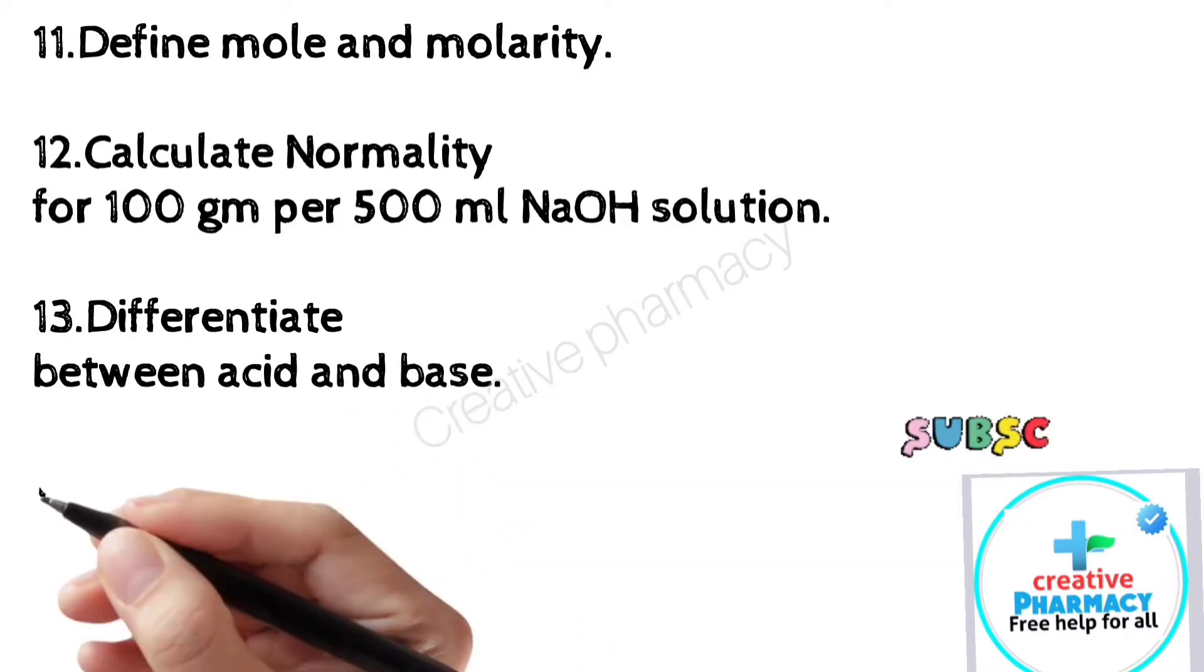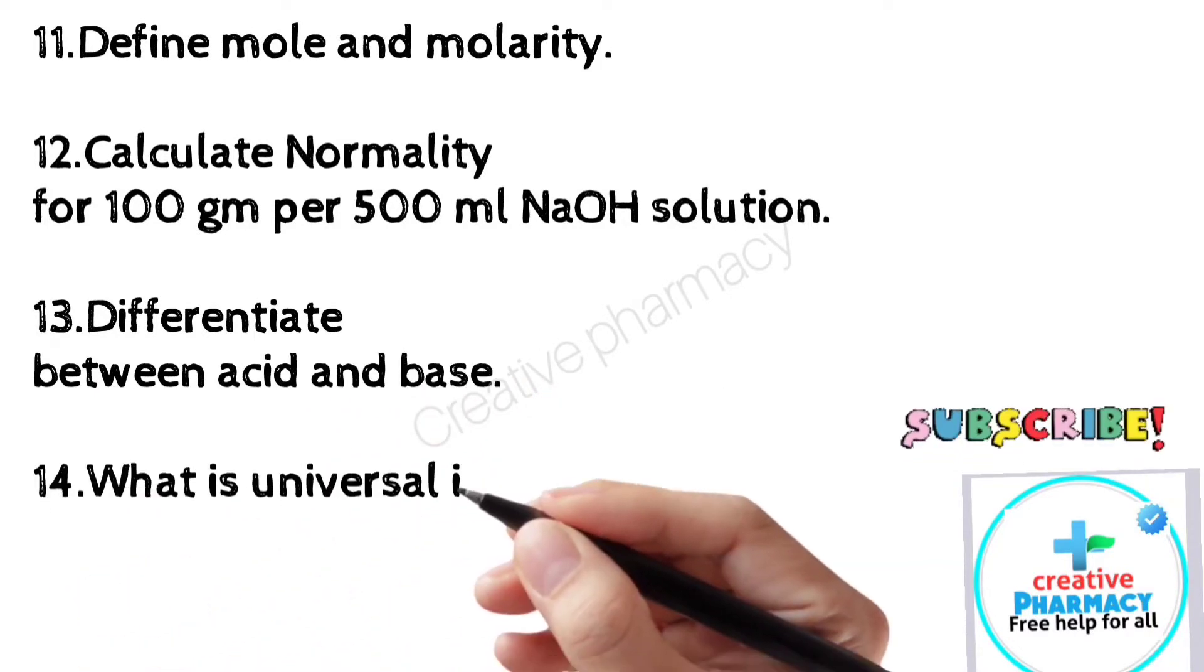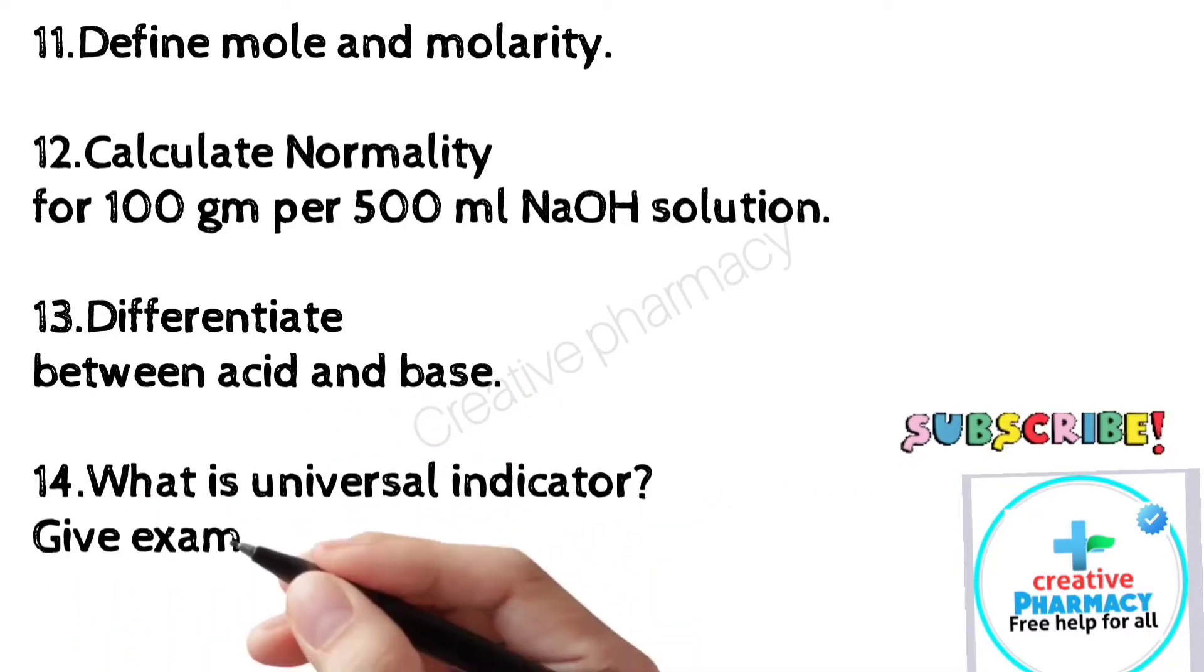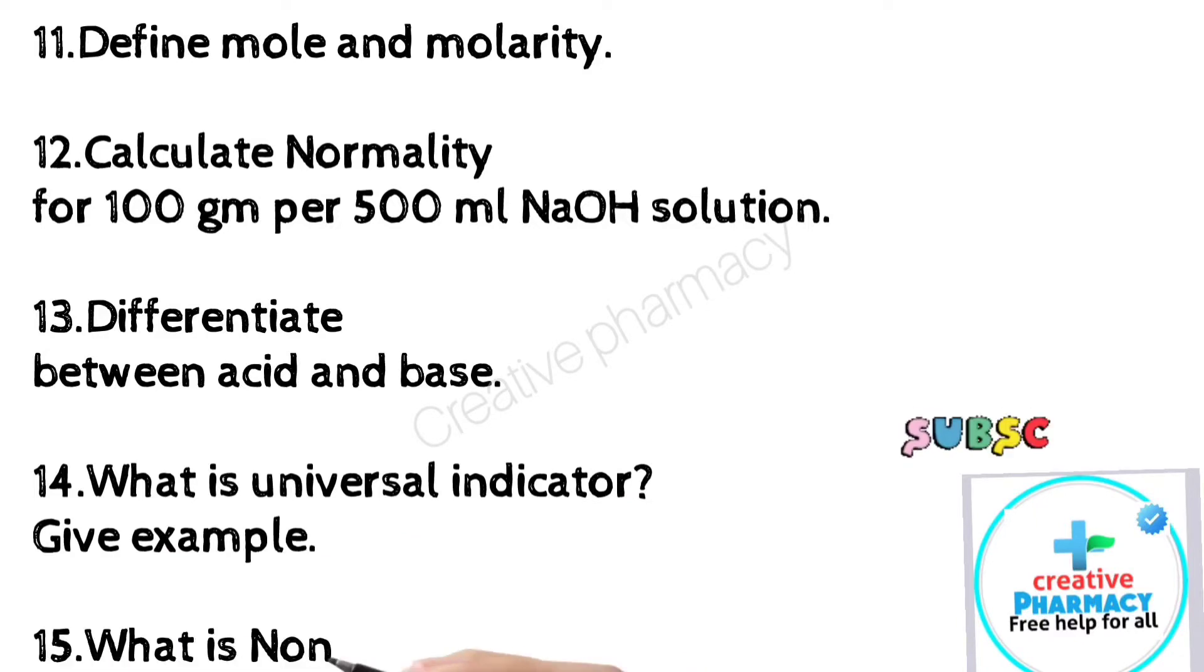14. What is universal indicator? Give example. 15. What is non-aqueous titration? 16. Give principle of Mohr's method.